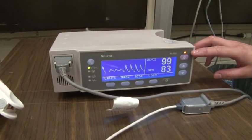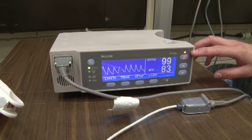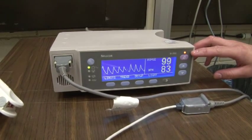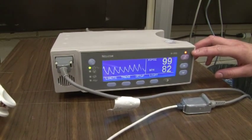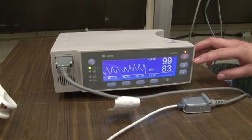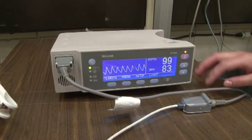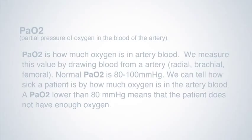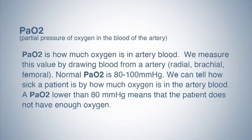Normal SpO2 for a patient is between 90 and 100 percent. If the SpO2 is less than 90 percent, that may indicate that the patient needs oxygen therapy. The second value we look at to determine if oxygen therapy is needed is the PaO2, which is the partial pressure of oxygen in the blood of the artery.